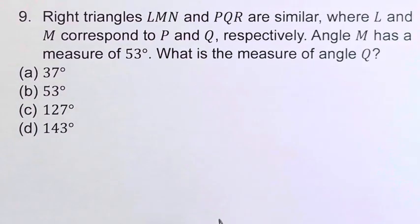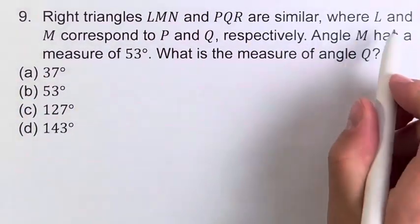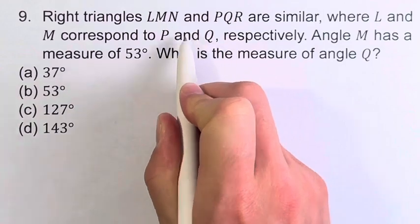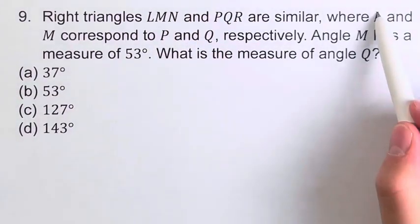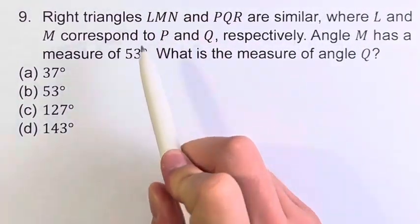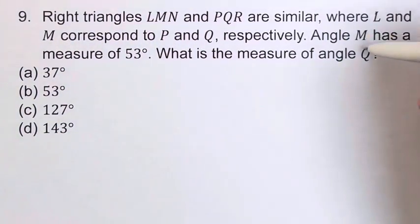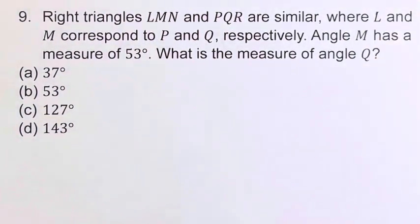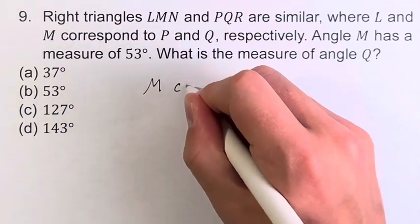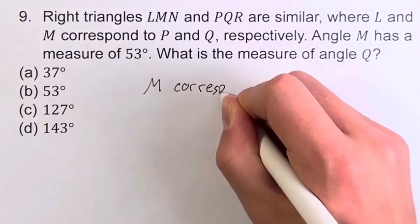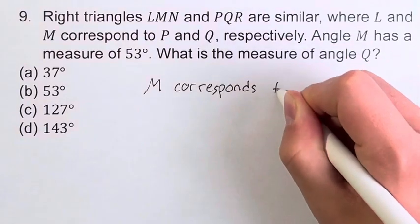But the quickest way to solve this problem is to notice that where L and M correspond to P and Q, this means L corresponds to P and M corresponds to Q. And since M and Q are what we're dealing with, that's what we're going to focus on. M corresponds to Q.